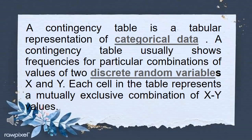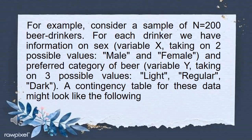A contingency table is a tabular representation of categorical data. It usually shows frequencies for particular combinations of values of two discrete random variables, X and Y. Each cell in the table represents a mutually exclusive combination of X and Y values. For example, consider a sample of n equals 200 beer drinkers. For each drinker, we have information on sex (variable X), taking two possible values — male and female — and preferred category of beer (variable Y), taking three possible values: light, regular, and dark.